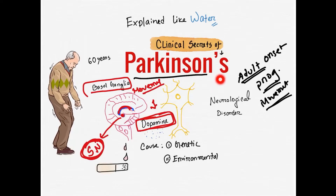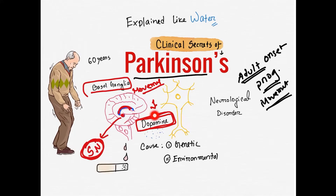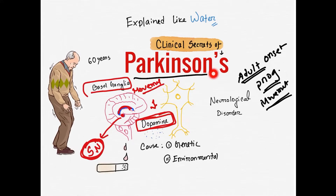When dopamine-producing neurons in the substantia nigra degenerate, dopamine production decreases, and the basal ganglia loses normal dopaminergic input. Ultimately, this reduction in dopamine causes Parkinson's disease.